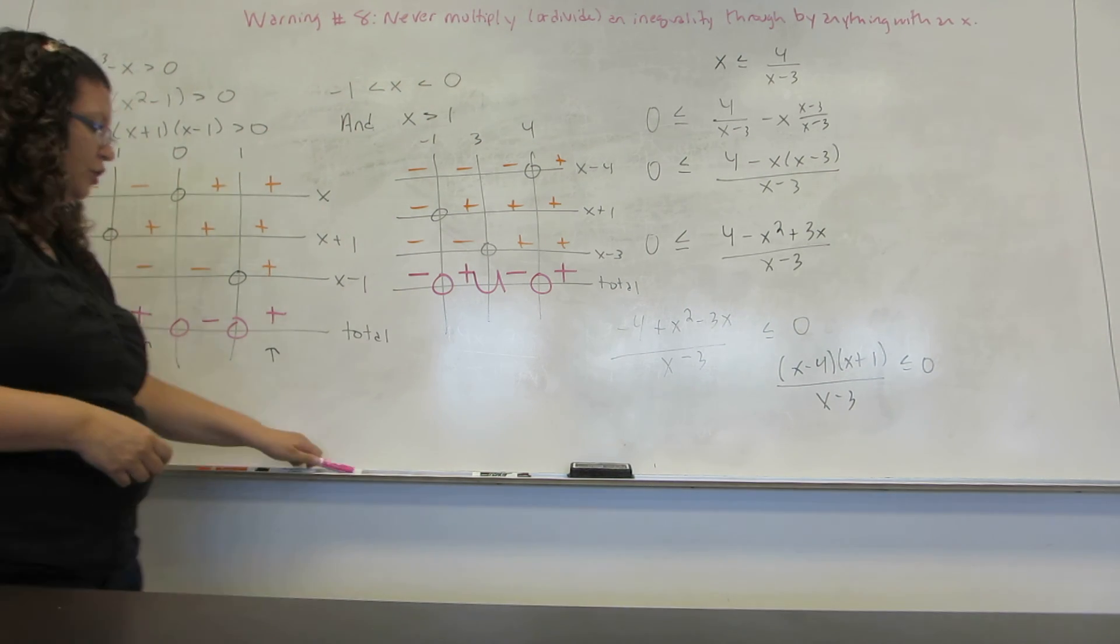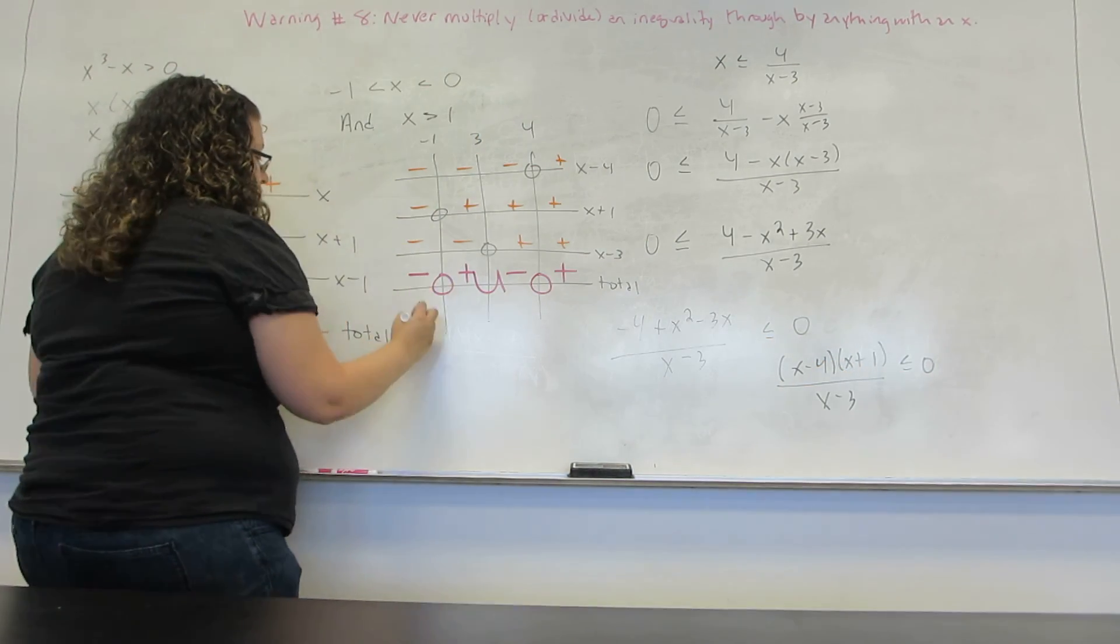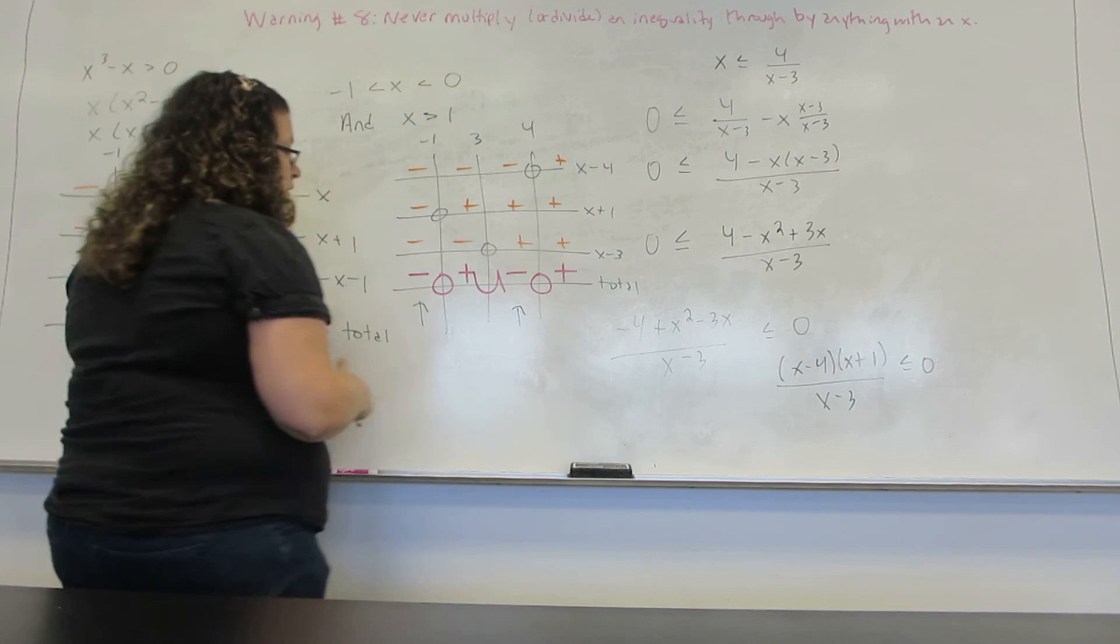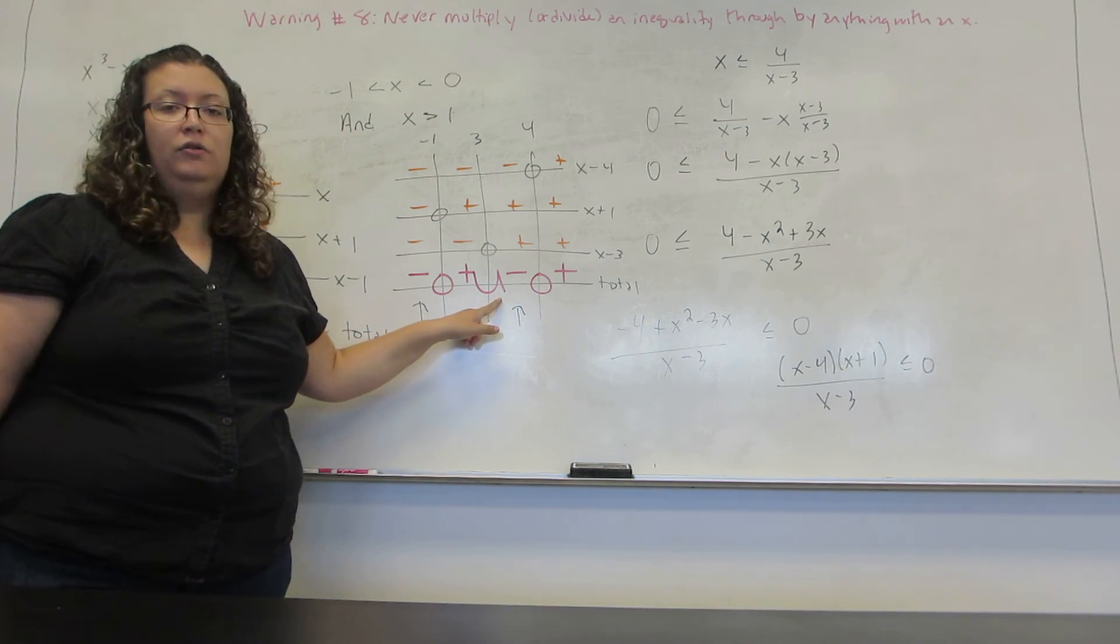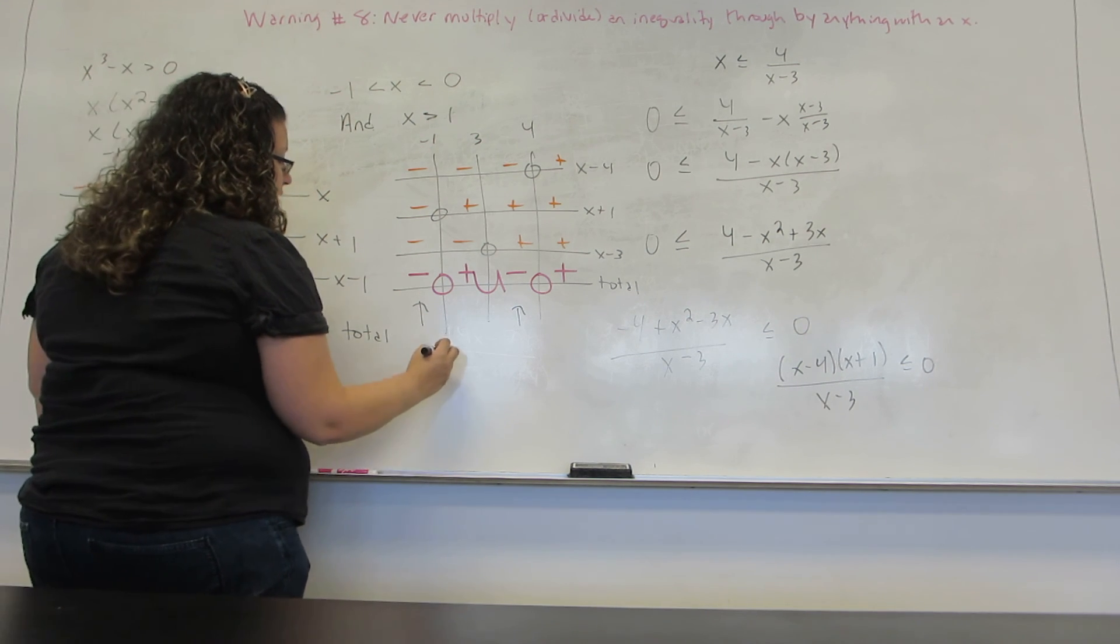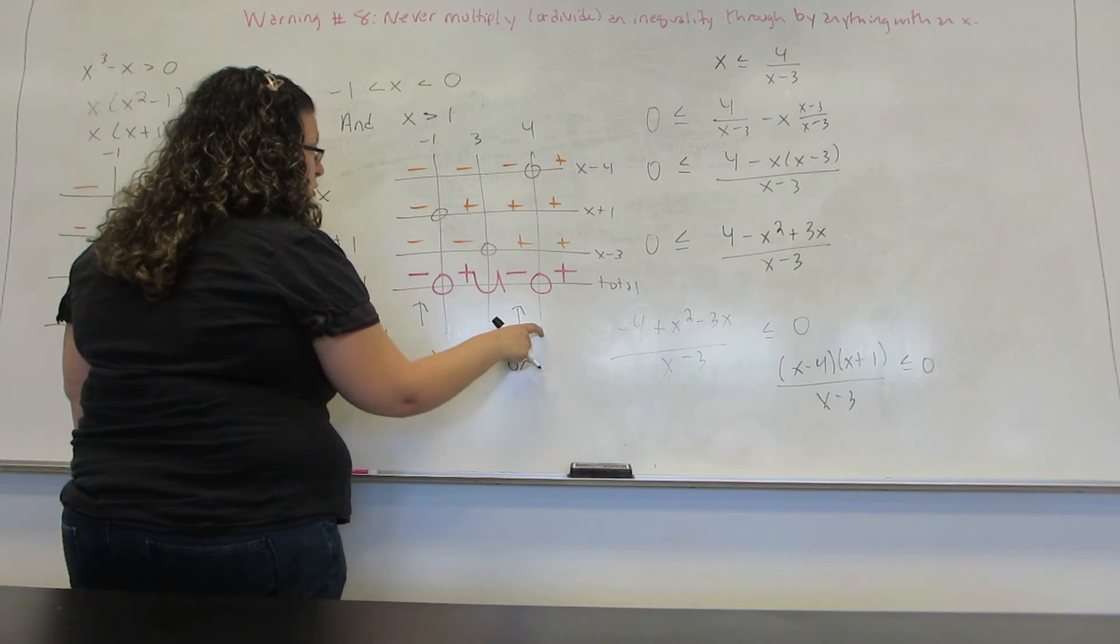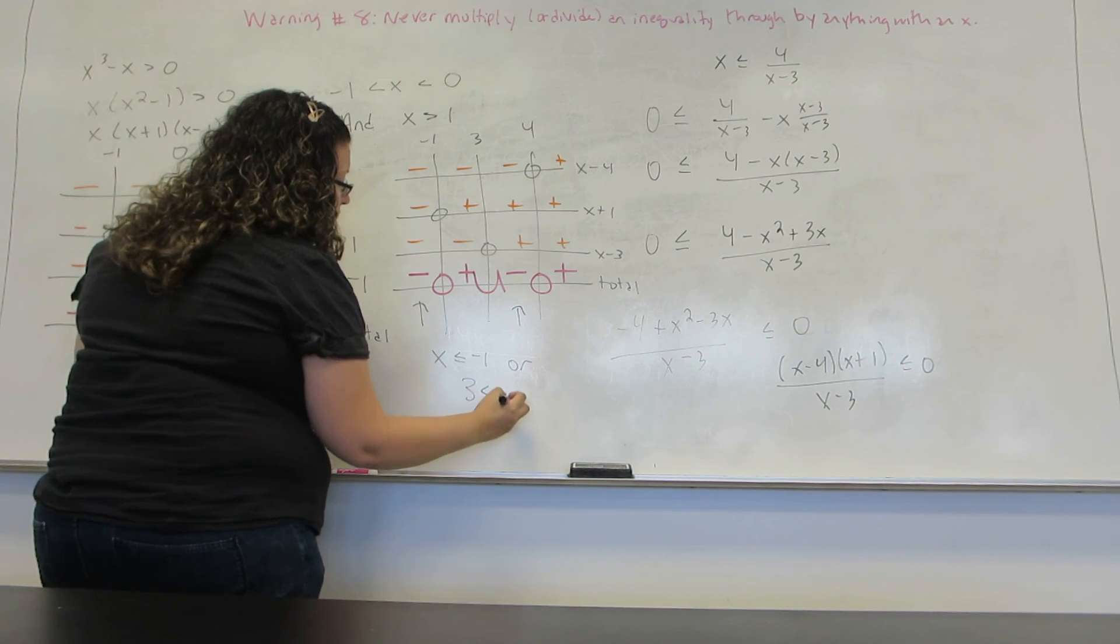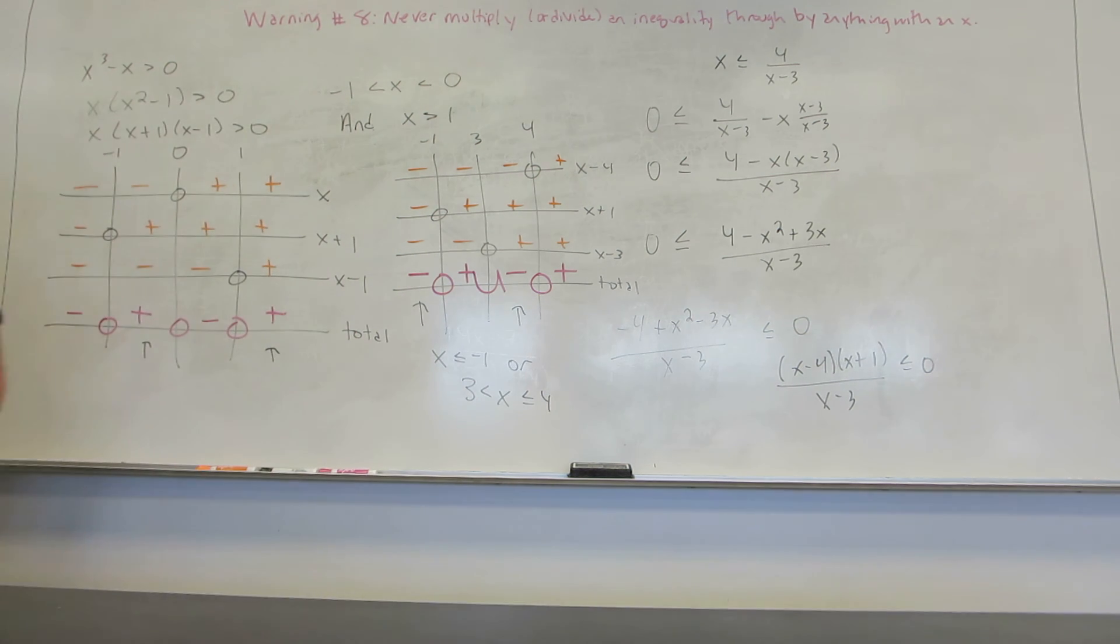Now I have to interpret my answer. I want places where it's less than or equal to zero. So I want these two boxes. I'm allowed to include the zero points, but of course I can't include the undefined points. So this one is everything less than or equal to negative one. This one is everything between three and four. I can include the four, but not the three, because I'm allowed to include where it equals zero, but not where it is undefined.